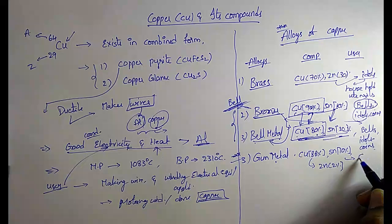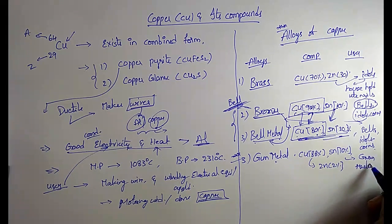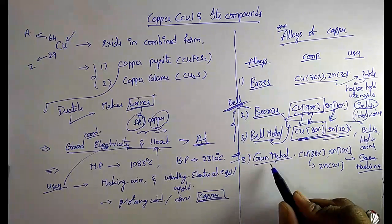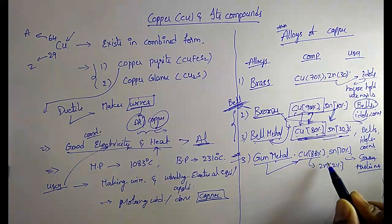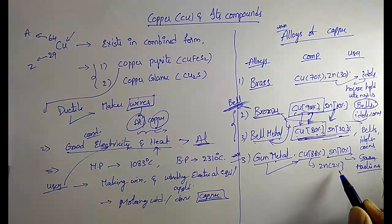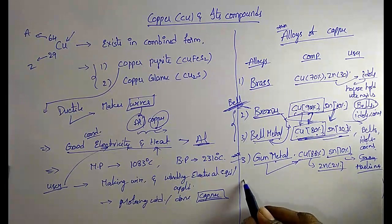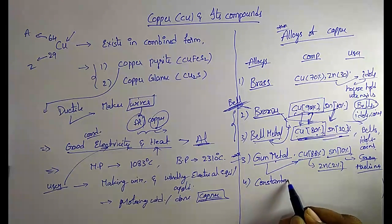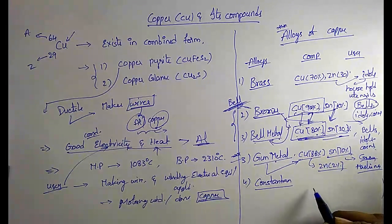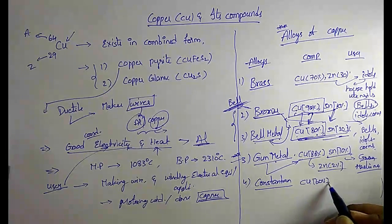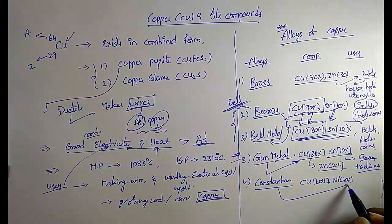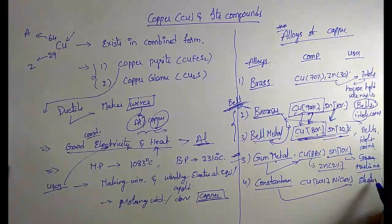Gun metal is used for making guns and machines. Gun metal composition: copper 88%, tin 10%, and zinc 2%. The next important alloy is constantan. In constantan, copper is 60% and nickel is 40%. It is used to make electrical tools.